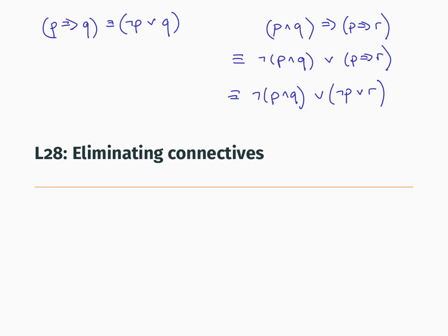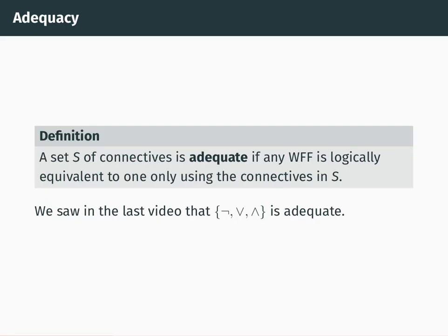So the implies connective isn't strictly necessary. Given any well-formed formula using our four logical connectives, you can find a logically equivalent well-formed formula which doesn't use implies. So in fact, any well-formed formula up to logical equivalence is equivalent to one that only uses and, or, and not. And that property is called adequacy.